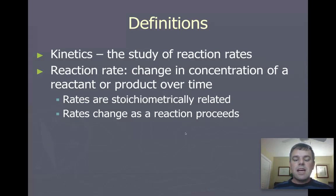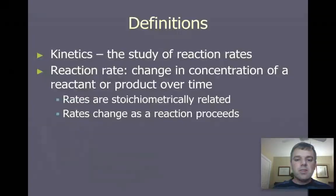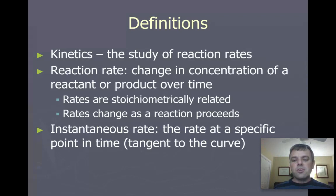The other thing is that rates change as the reaction proceeds. So this part, that's where the slope of the line is not constant, it starts to level off. And what we are concerned with in AP chemistry is the instantaneous rate, which is the rate at a specific point in time, it's the slope of the line tangent to the curve, and really it's initial rates that we talk about.